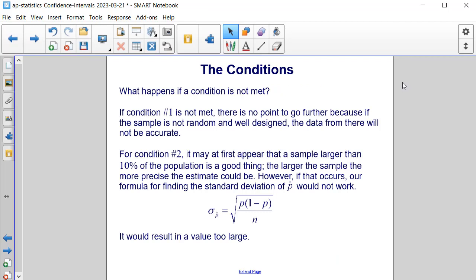What happens if a condition is not met? If condition number 1 is not met, there is no point to go further, because if the sample is not random and well-designed, the data from there will not be accurate.